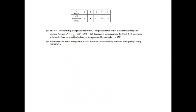Okay, part C. At 8 p.m., volunteers begin to process the entries. They process the entries at a rate modeled by the function P, where P of T equals that formula, hundreds of entries per hour, for 8 to 12. According to the model, how many entries had not yet been processed by midnight? So I want to know how many entries had not been processed. Well, this will tell me how many had been processed. So I'll find out how many entries there were and subtract how many had been processed.